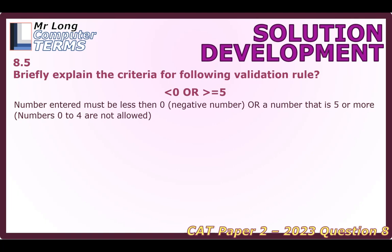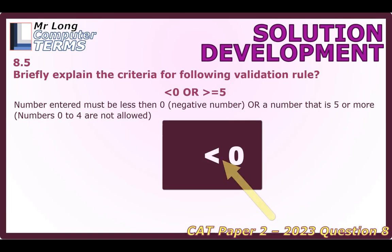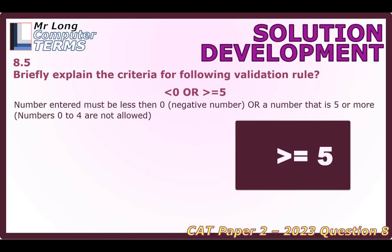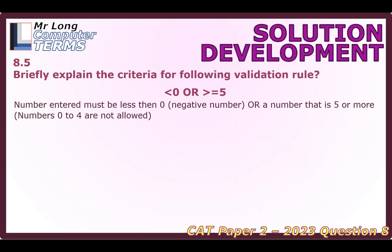With those less than and greater than symbols, a lot of people struggle with that. Think of it like a crocodile — the 0 is at the end of the bigger portion of the mouth of the less than symbol, so 0 is the bigger number and we want numbers smaller than it. On the other side, the mouth's open end means we want numbers bigger than 5, so 5 is the smallest allowed amount.